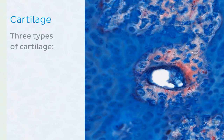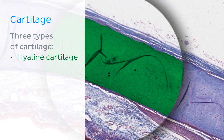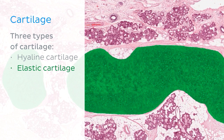There are three types of cartilage which are defined according to the composition of the extracellular matrix and the cells, which are the chondrocytes. These types of cartilage are hyaline cartilage, elastic cartilage, and fibrocartilage.